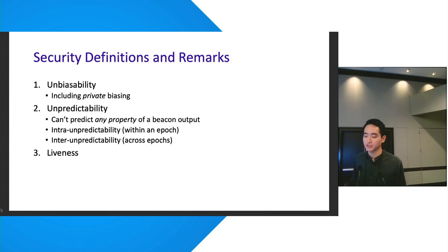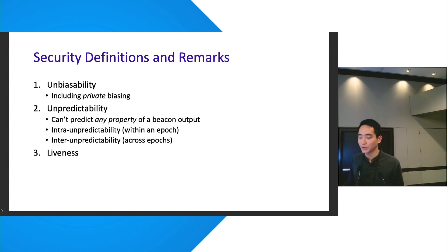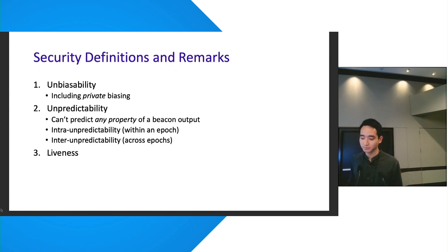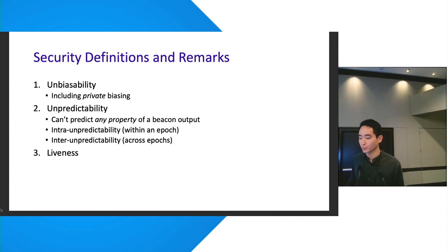Before delving into specific constructions, we consider general security definitions — a synthesis of various properties in the landscape. We define unbiasability, unpredictability, and liveness. Unbiasability includes the possibility of private biasing, where the beacon output appears pseudo-random to an outsider but has a secret key controlled by an adversary. Unpredictability captures predicting any property of a beacon output, not just the output itself, including within and across epochs. Our notion of liveness implies guaranteed output delivery, which is implied by our notion of unbiasability.